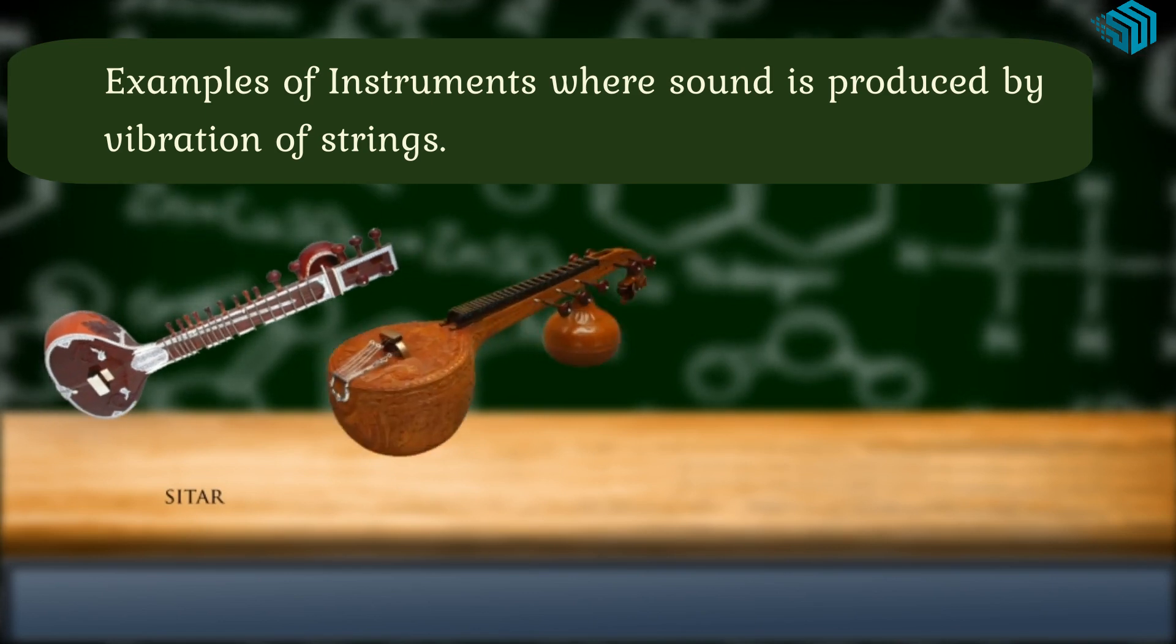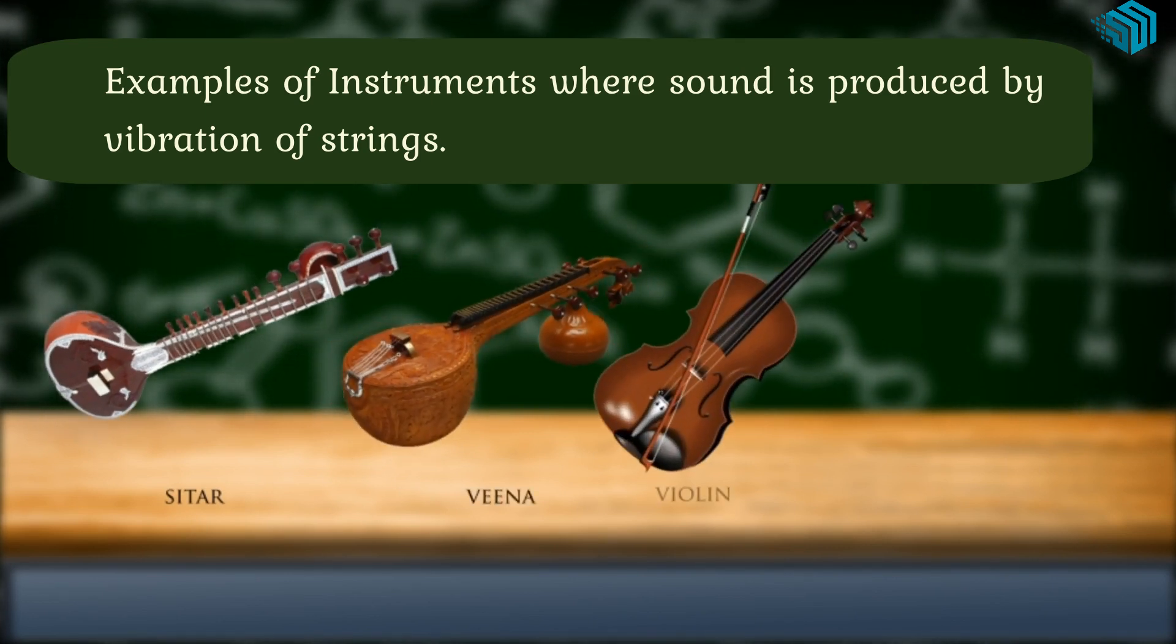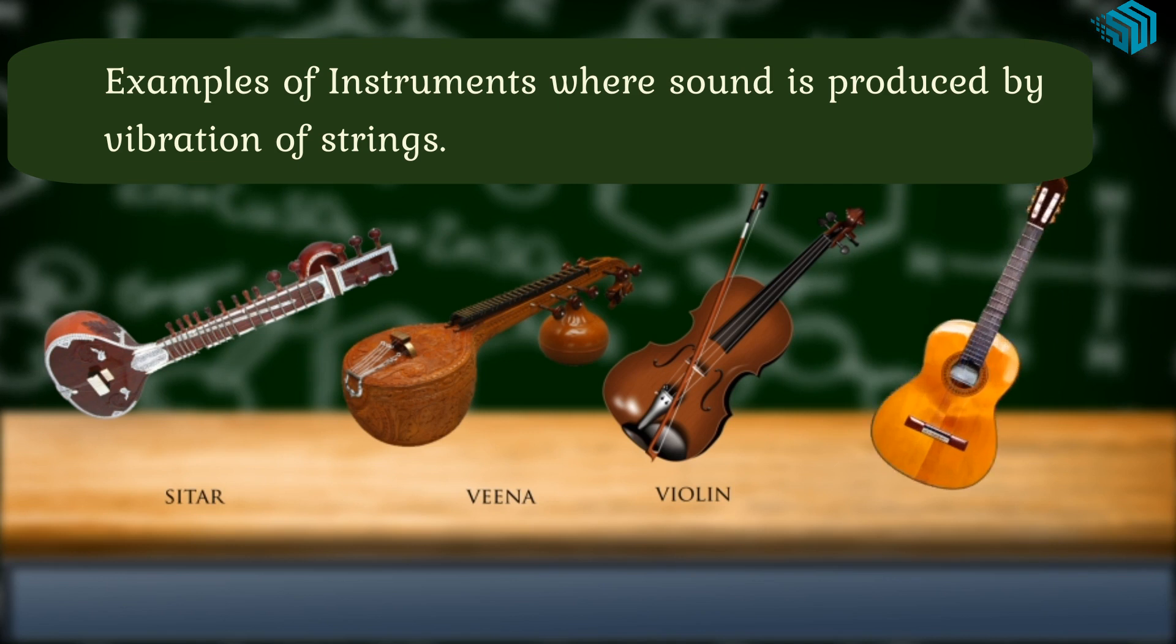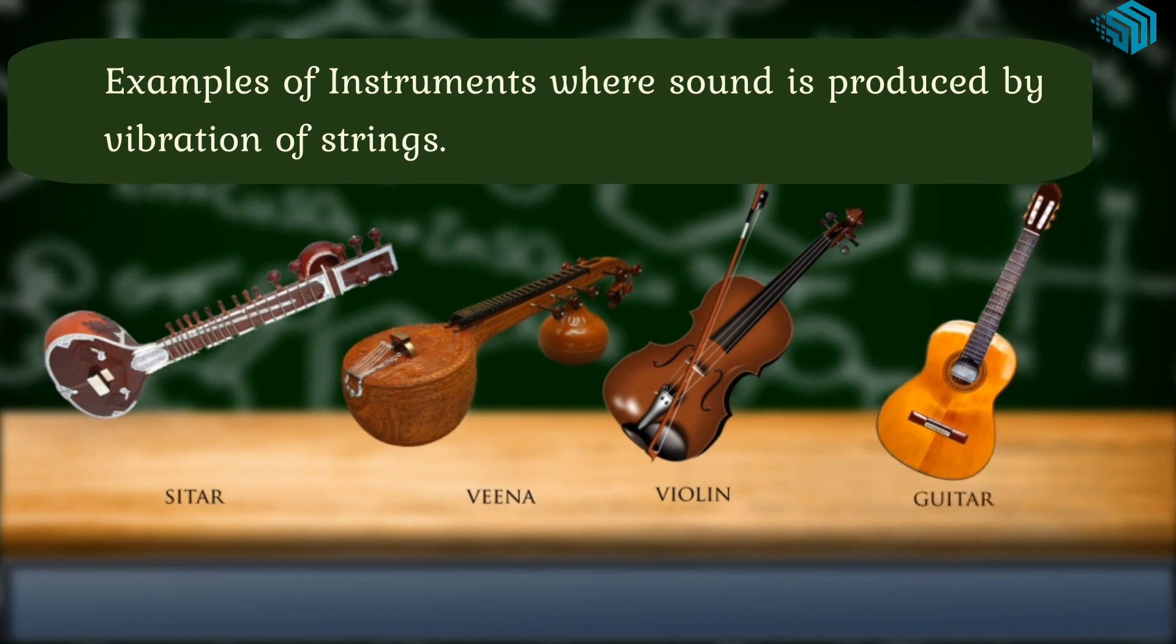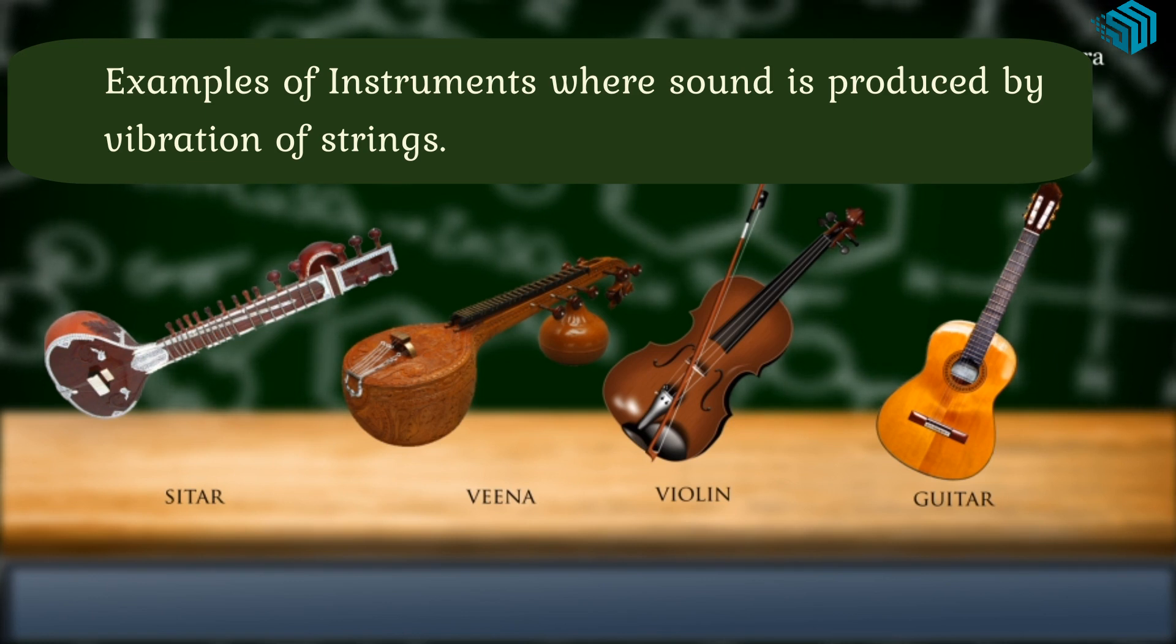Example of instruments where sound is produced by vibration of strings is sitar, veena, violin, guitar and iktara.